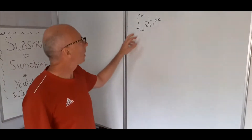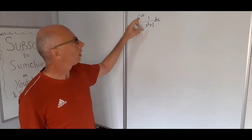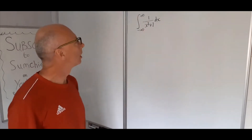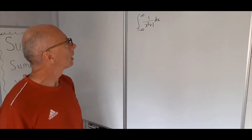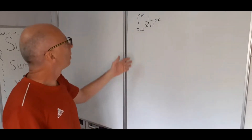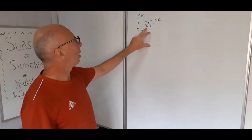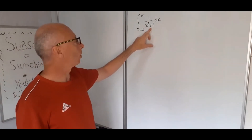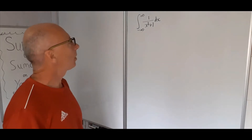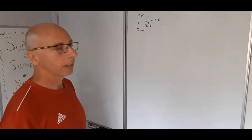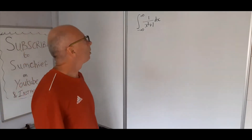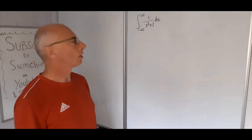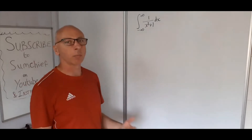We've got an integral from negative infinity to infinity of 1 over x cubed plus 1 dx. There's no trig sub, no u-sub, and integration by parts definitely won't work. The answer will involve the logarithm and the arctangent somewhere, but it's quite complicated to get there. There's an easy way — we go into the complex world.